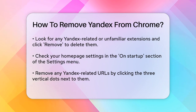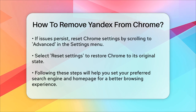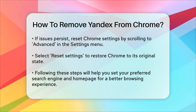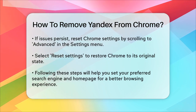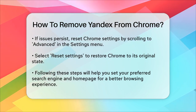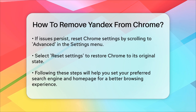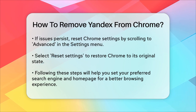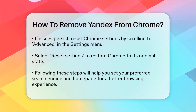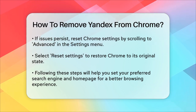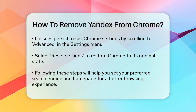If you're still having trouble, you might need to reset your Chrome settings. To do this, go to the Settings menu, scroll down to Advanced, and then select Reset Settings. This will restore Chrome to its original settings, removing any unwanted changes.